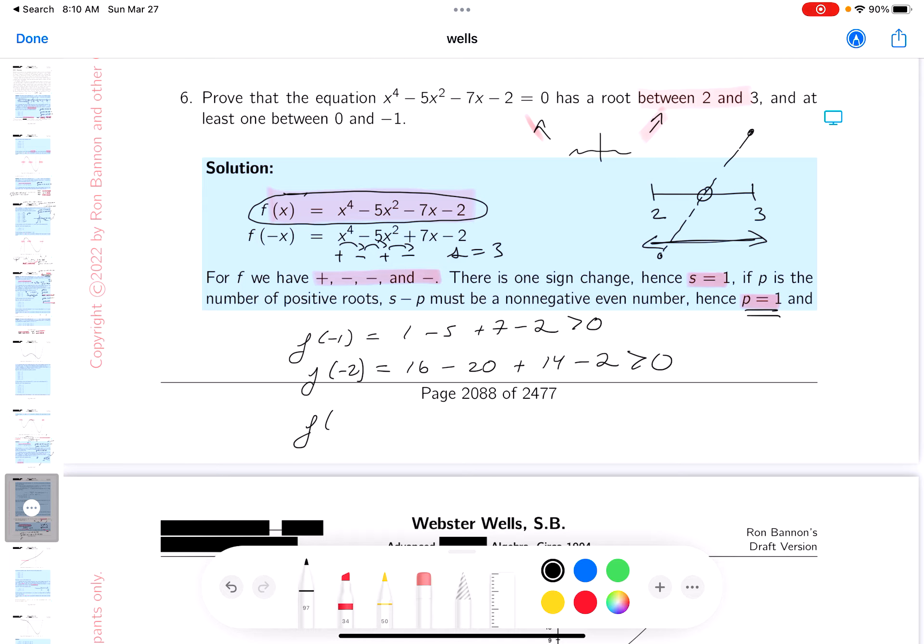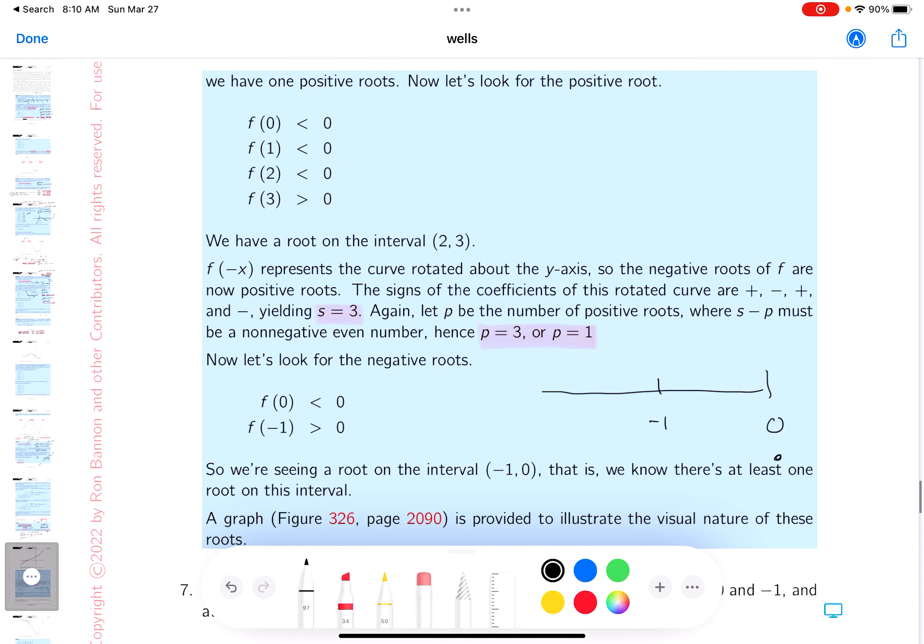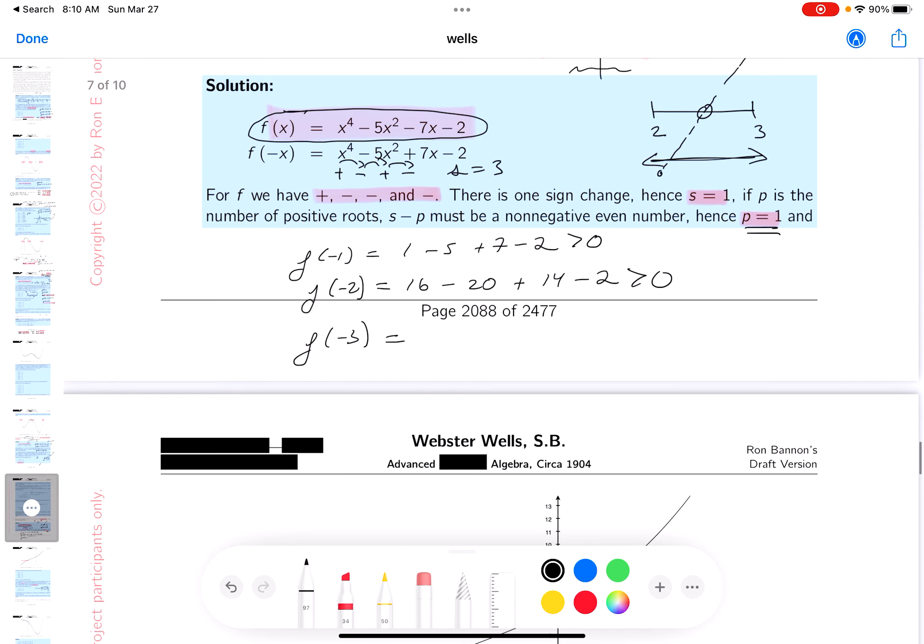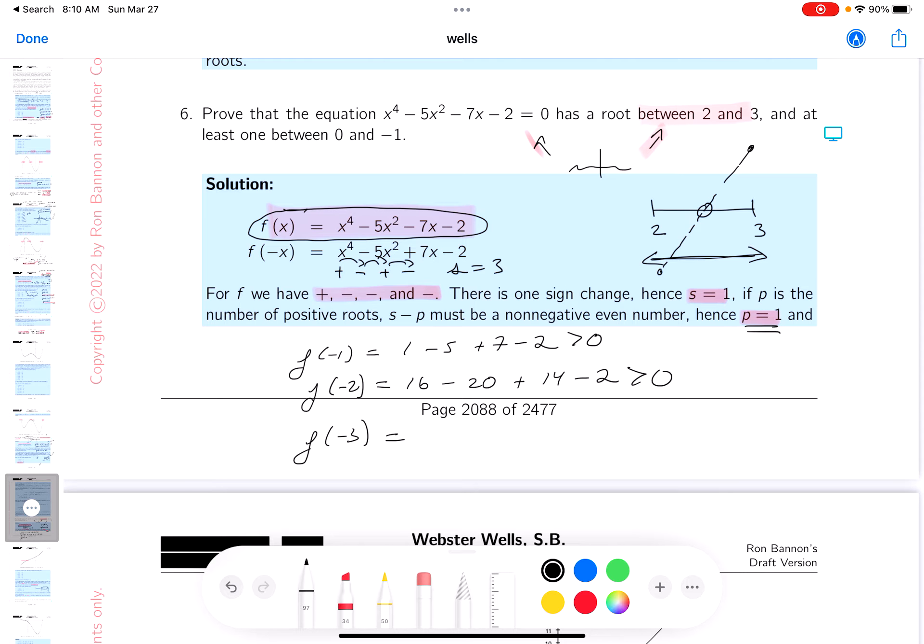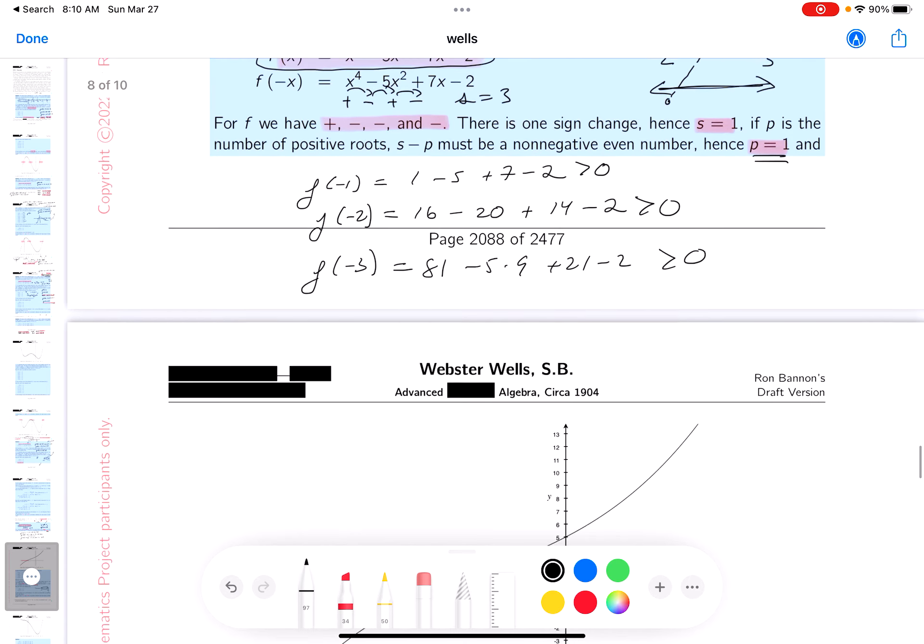I'm hoping you're starting to realize that as I go further out, the only possible place for a root now is over here. That's the only possible place. If I keep going out, minus 3, you get 81 minus 5 times 9 plus 21 minus 2. We're now positive. So I know that much. We'll look at the picture later.